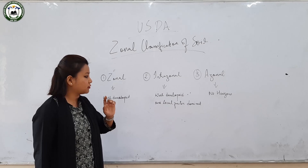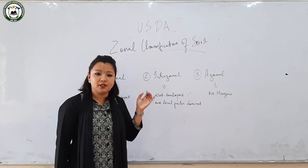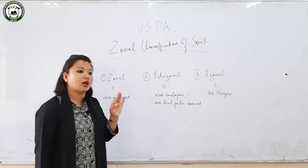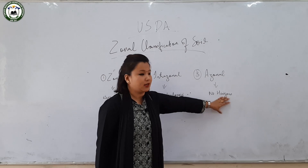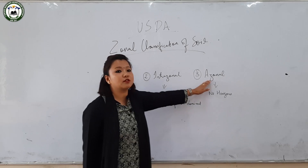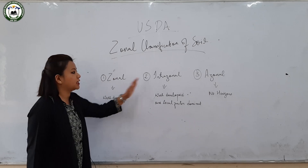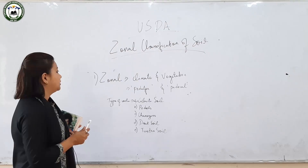Intrazonal soil also has a well-developed profile, but one local factor is dominant — either parent material, climate, or vegetation. In azonal soil, there are no horizons, and therefore it is regarded as younger soil. Zonal and intrazonal soils are regarded as older soils, while azonal soils are regarded as younger soils.